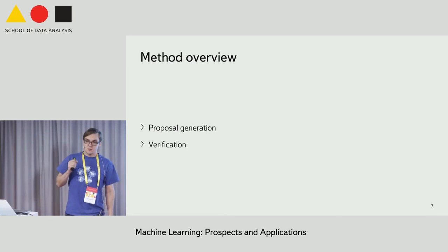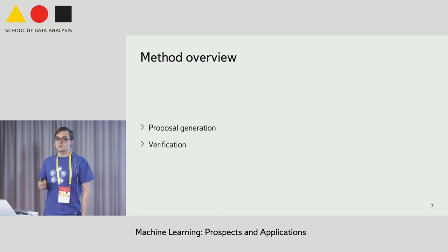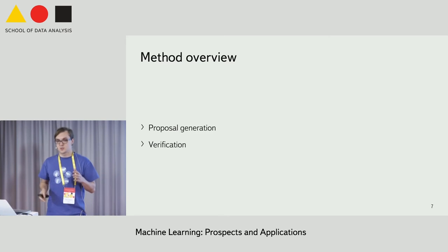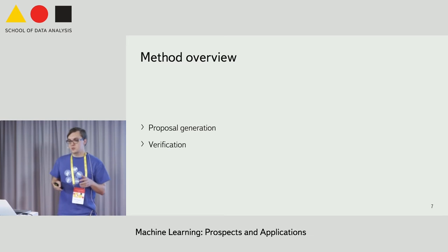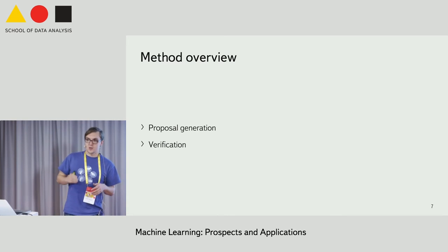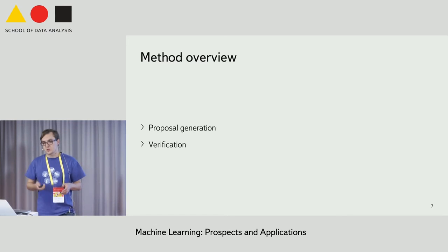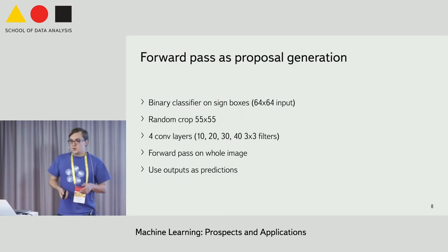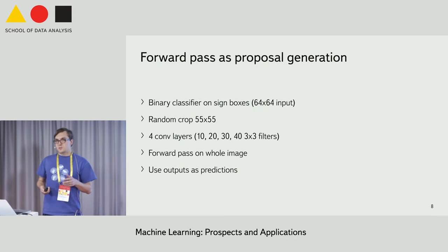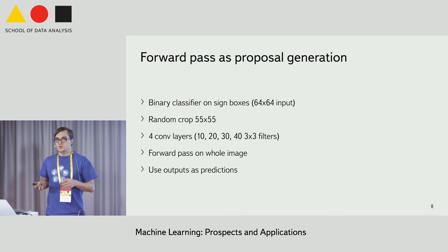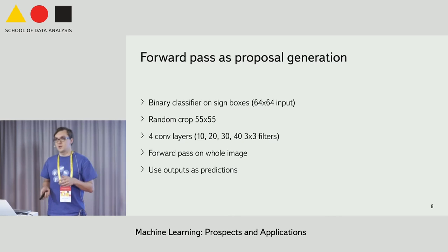Usually detectors consist of two steps: proposal generation, which is light and fast, and verification. I described how to create proposal generation using only deep learning.